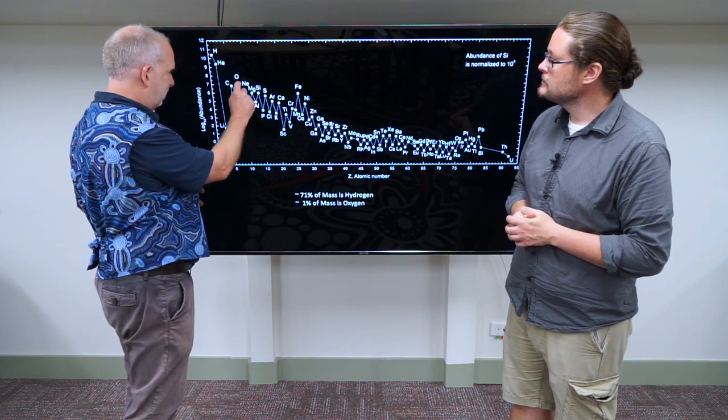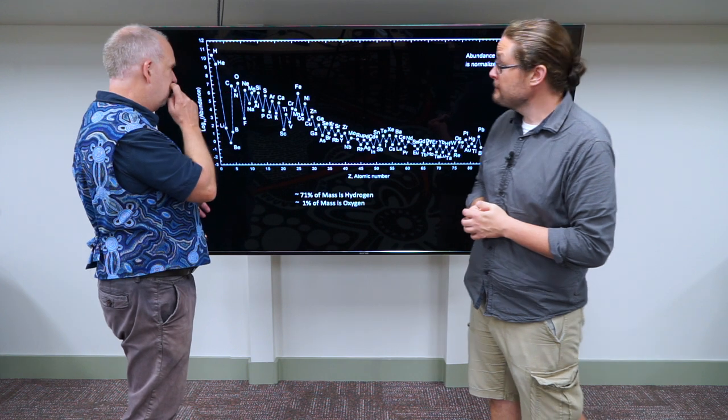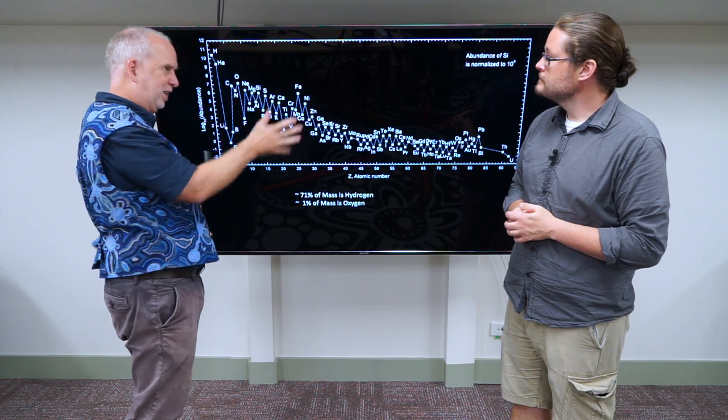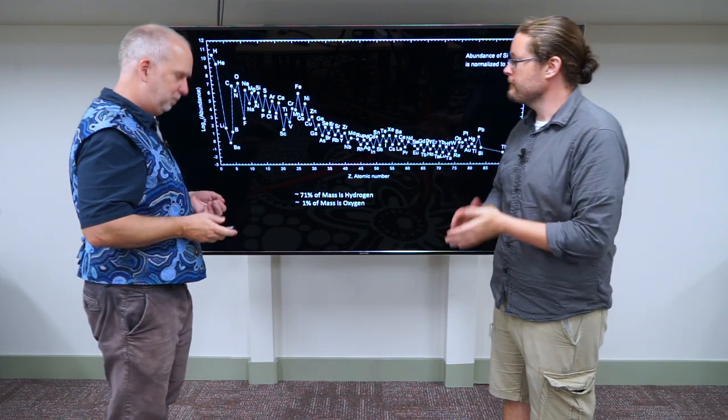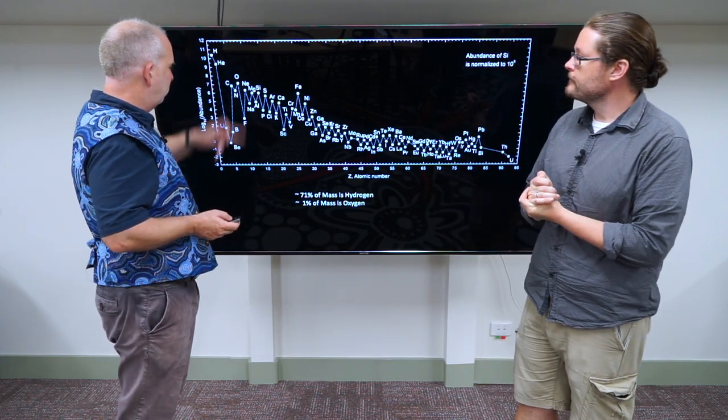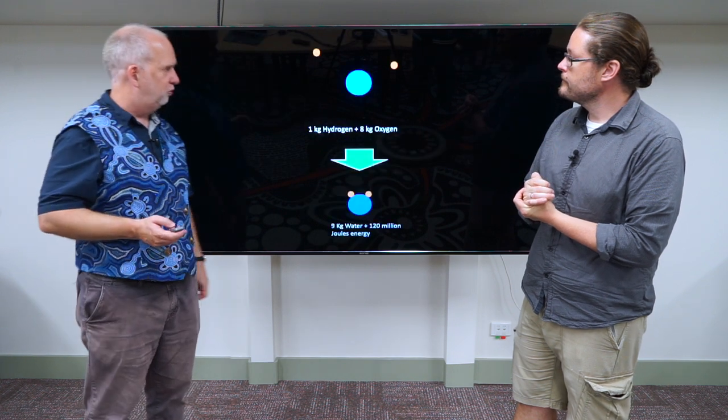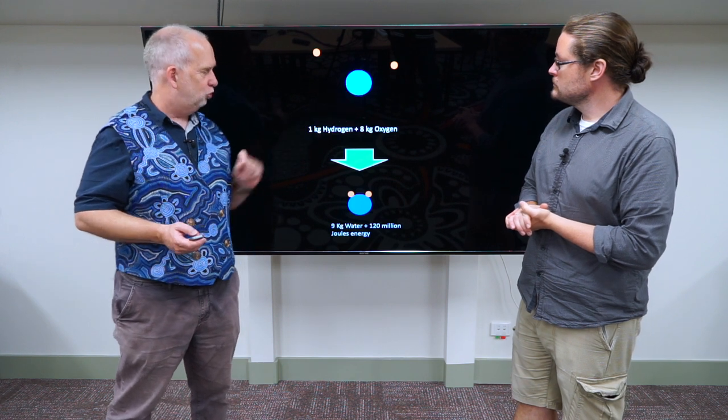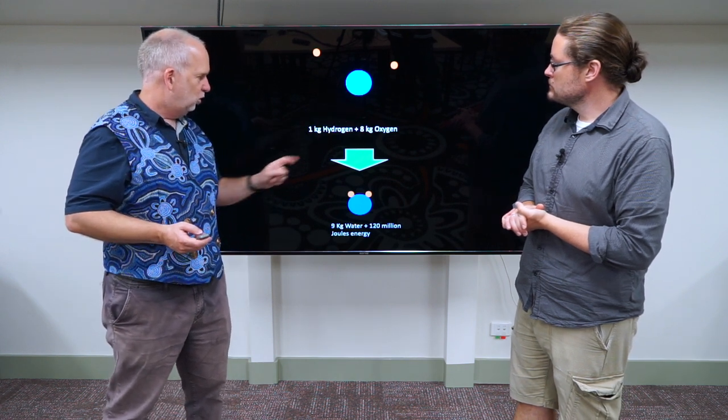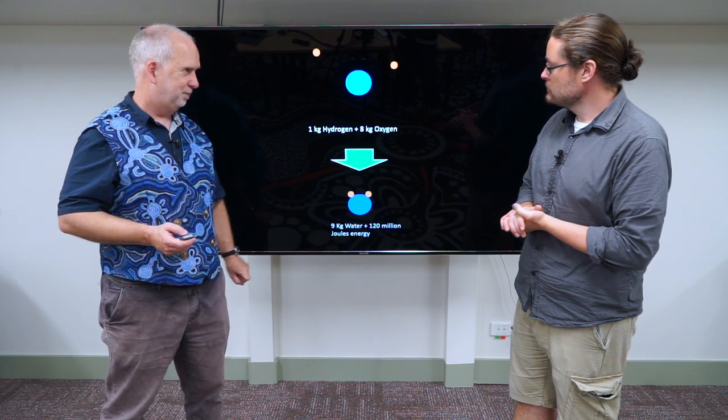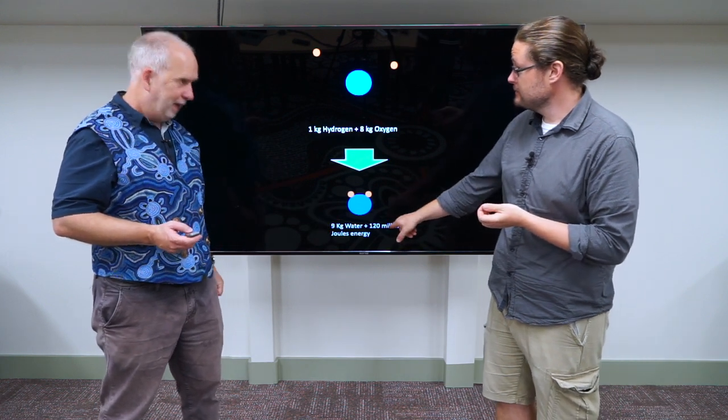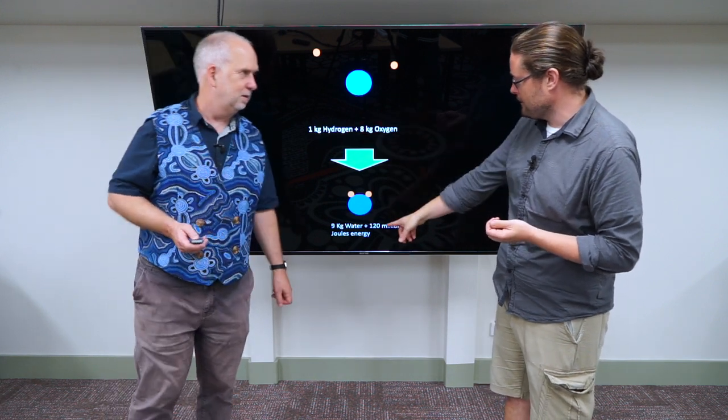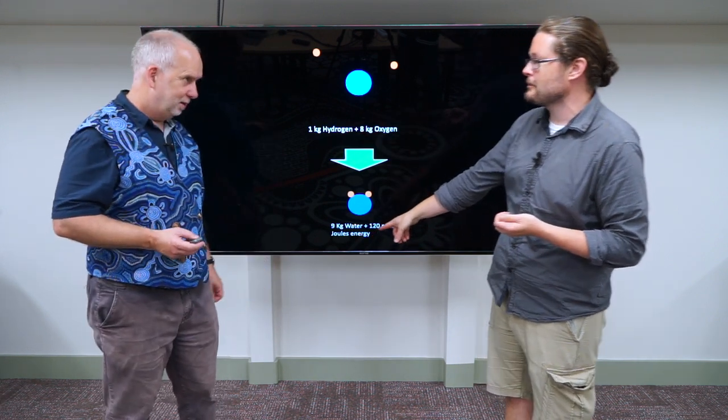So let's work out the calculation for oxygen. Oxygen is the next most common. Because it's a log scale, there's actually like 10 times more of it than any of these. So combine hydrogen and oxygen. That's a reaction that's very well understood. You take two hydrogen atoms and one oxygen atom, and you combine them to make water, plus energy. And for only 9 kilograms worth of stuff, 120 million joules of energy seems like a lot.